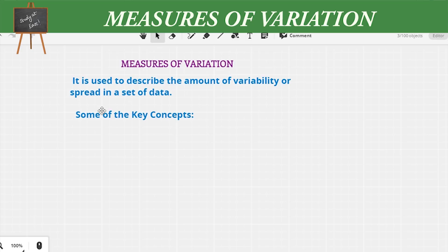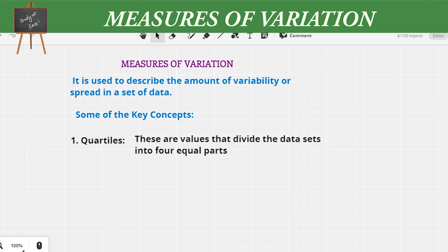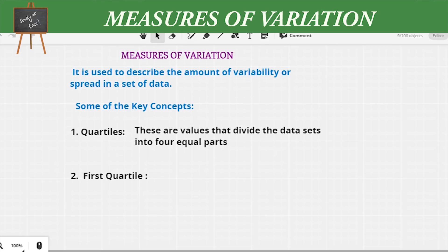Before going into detail on how to do a question, we must know some key concepts. The first one is quartiles. Quartiles are values that divide a data set into four equal parts. The given data set will be arranged from small to big and divided into four equal parts.